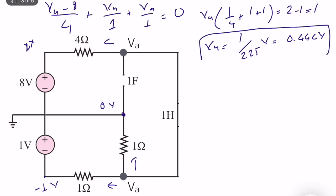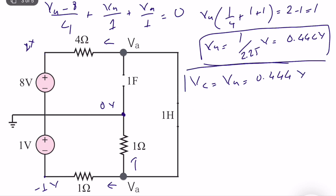We have already computed the node voltage VA. The next step is computing the capacitor voltage. Since one terminal of the capacitor is at zero volts and the other is at VA, VC is technically equal to VA, which is equal to 0.444 volts.